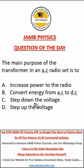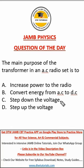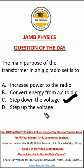Option C says step down voltage — correct. What it does is step down the 240 volts, that's Nigerian mains voltage, to 12 volts that the electronic parts of the radio can utilize. So that's what it does: it steps down voltage.